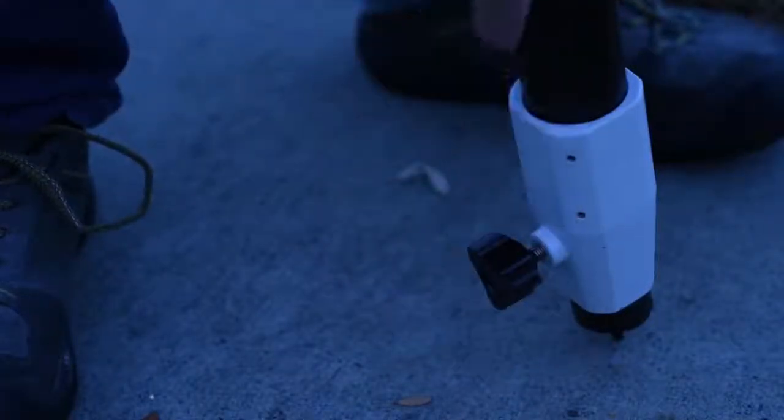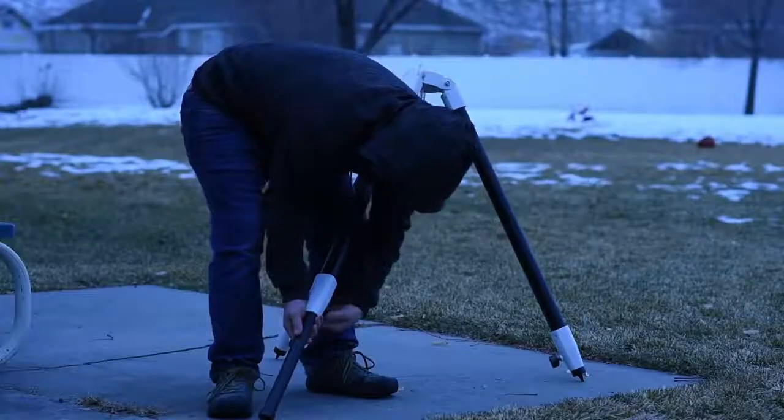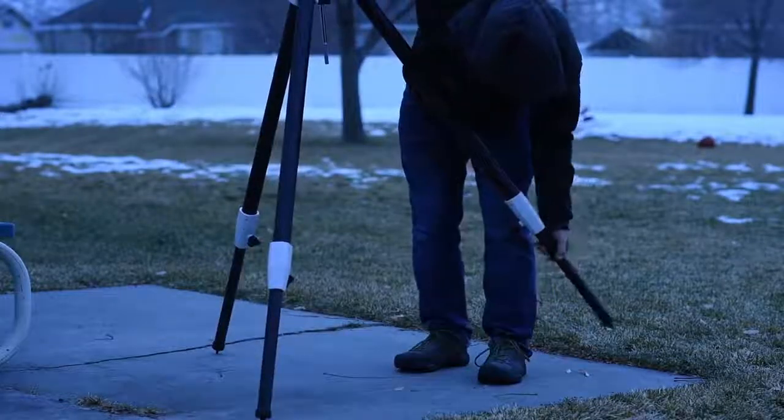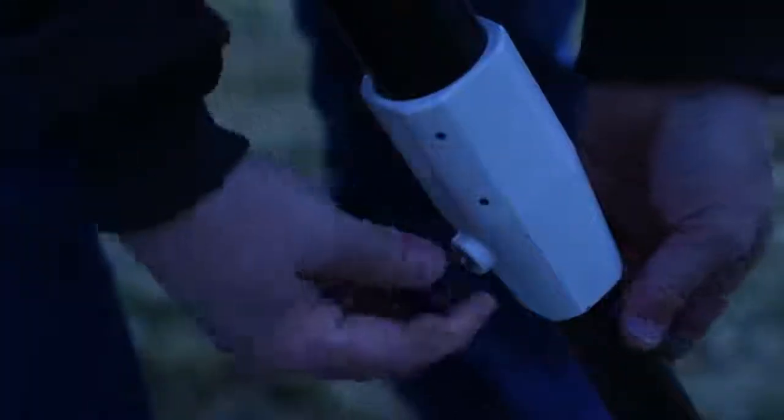Adjust the height of the tripod by loosening the height adjustment lock knobs at the bottom of each leg, one at a time. Raise the leg to the desired level and tighten the lock knobs so the tripod head is level.